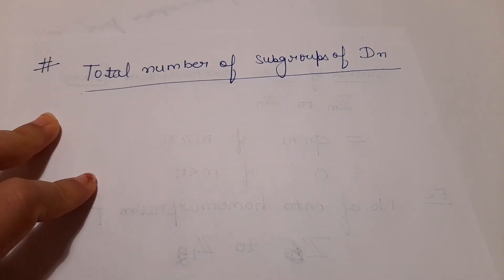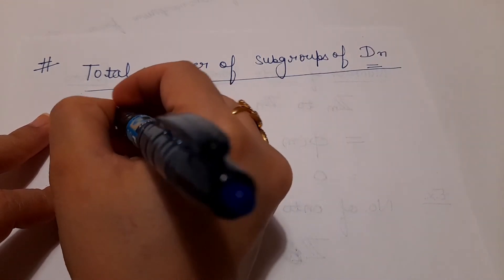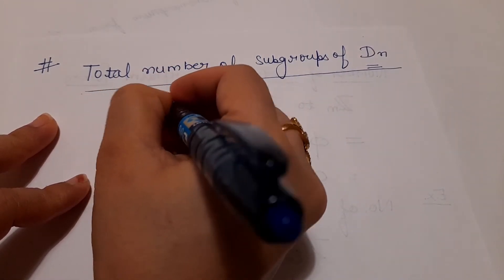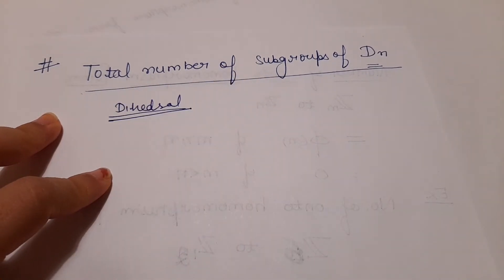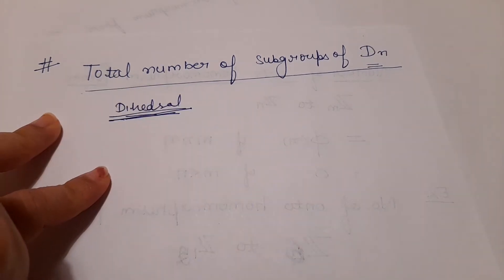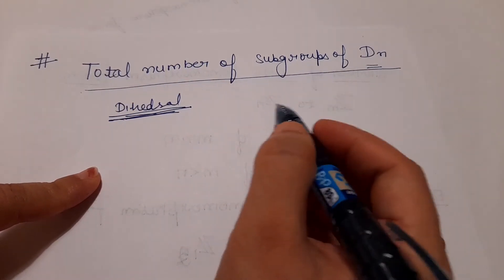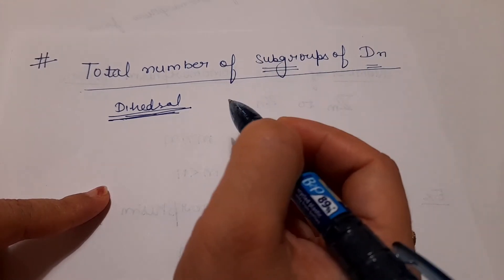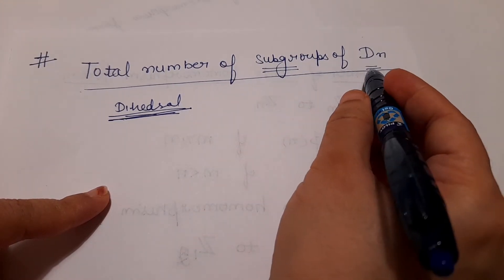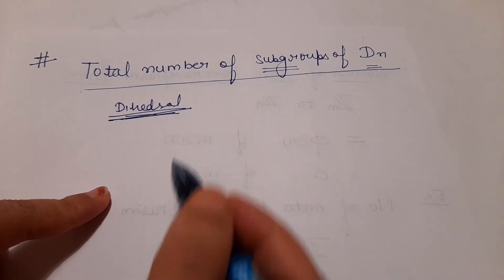This is the short trick for finding the total number of subgroups of Dn — the dihedral group. I have a detailed video on this group covering rotations and reflections. In today's video, we are going to do a short trick for finding the total number of subgroups of Dn. Subgroups mean subsets of a group which are groups themselves.